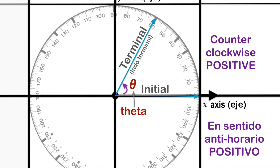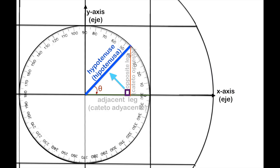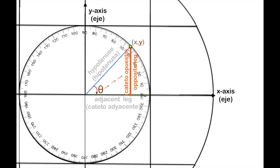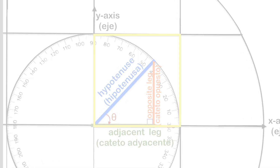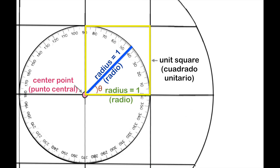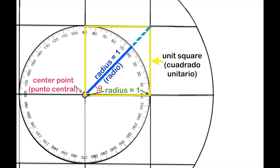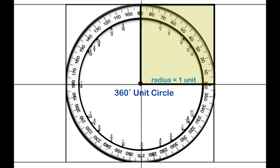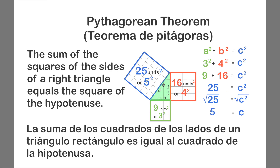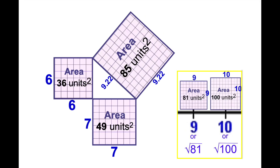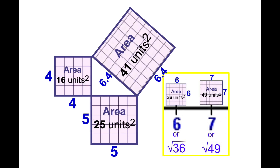Theta is used as a variable to represent a measured angle. The longest side of a right triangle is the hypotenuse, formed opposite the right angle. Theta faces the opposite side, and the adjacent side is next to theta. In a unit circle, the radius measures one unit in length. Trigonometry combines the unit circle, the coordinate plane, right-angle triangles, and the Pythagorean theorem, which involves right triangles and square units used to measure area.